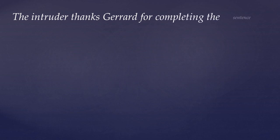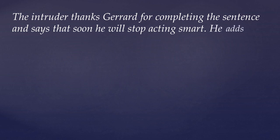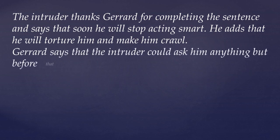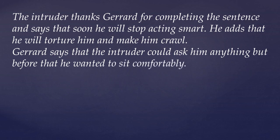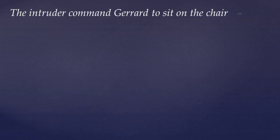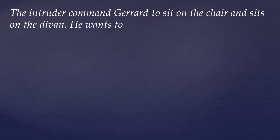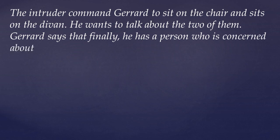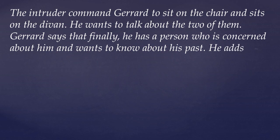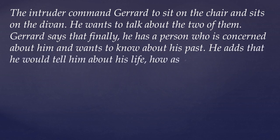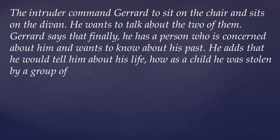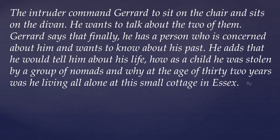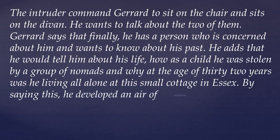The intruder thanks Gerard for completing the sentence and says that soon he will stop acting smart. He adds that he will torture him and make him crawl. Gerard says the intruder could ask him anything but wanted to sit comfortably first. The intruder commands Gerard to sit on the chair while he sits on the divan. Gerard says that finally he has a person concerned about him — he would tell the intruder about his life, how as a child he was stolen by nomads, and why at age 32 he was living alone in Essex, building an air of suspense.